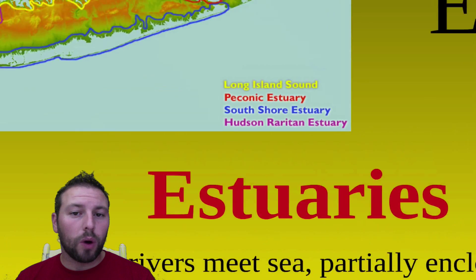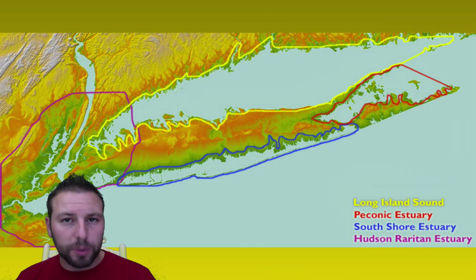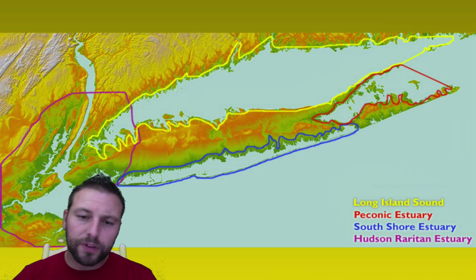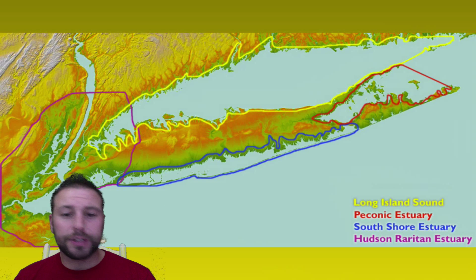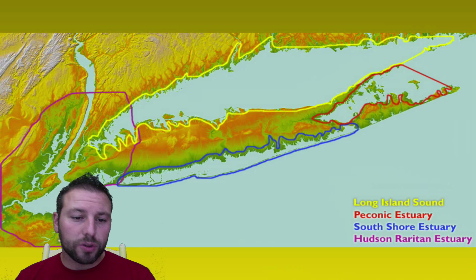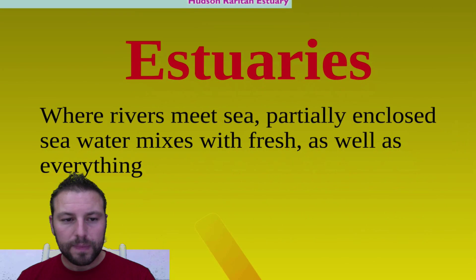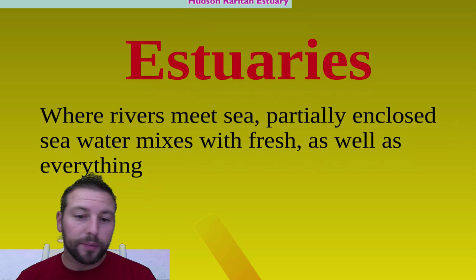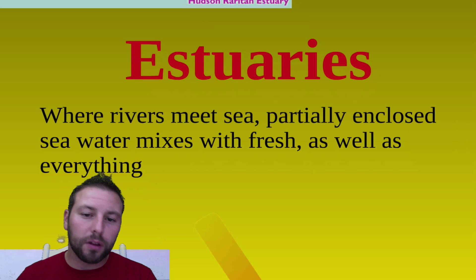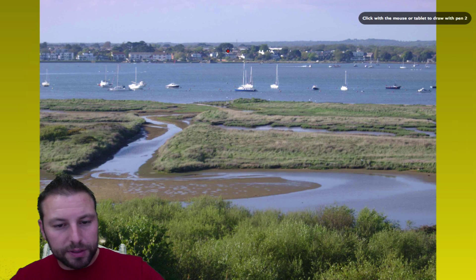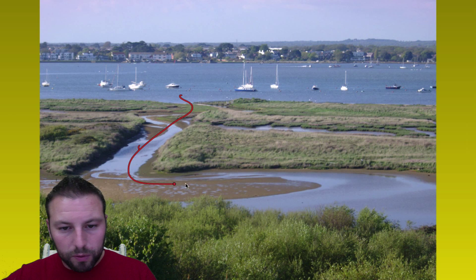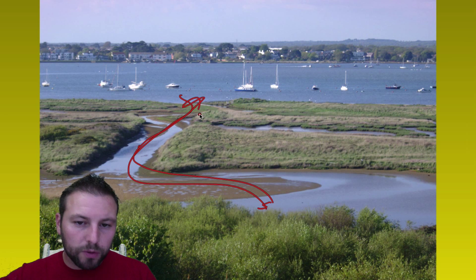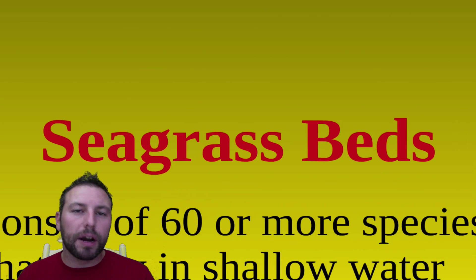Estuaries play a huge part for ecosystem stability here on Long Island and also provide a good economic resource as far as fish coming into and out of these regions. Almost every shoreline within Long Island is considered an estuary or has estuaries in it. These are nothing more than where rivers meet the sea — they're partially enclosed and seawater mixes with freshwater due to tidal movements. As the tide comes in, salt water moves up, and as the tide goes out, freshwater moves the other way. So we have organisms adapted to a variety of conditions.